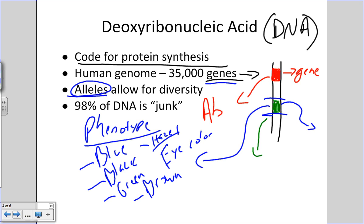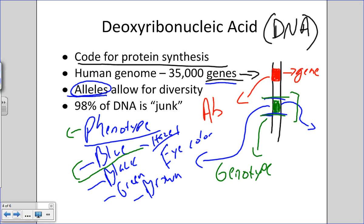Phenotype refers to the physical characteristics of gene expression. For example, you know there's a gene for eye color, and I have blue eyes — you can tell by looking at the physical characteristic of the organism. Genotype is when you're actually looking at the genome or the DNA sequence, or doing Mendelian genetics and Punnett squares to figure out what genes and characteristics people may have. Phenotype is the physical characteristics; genotype is the more molecular characteristics.